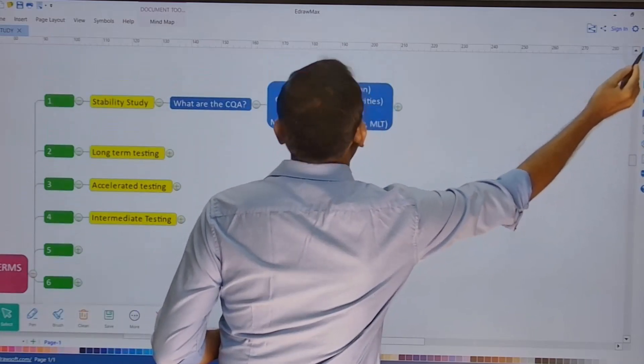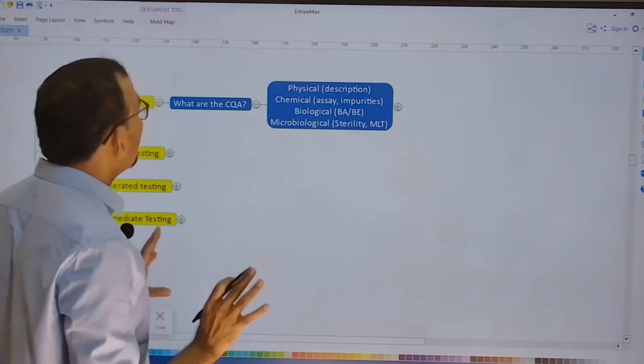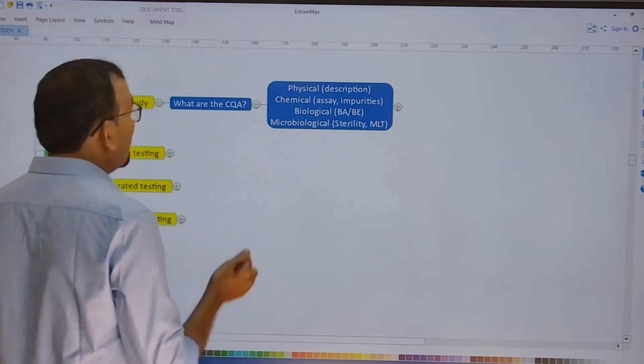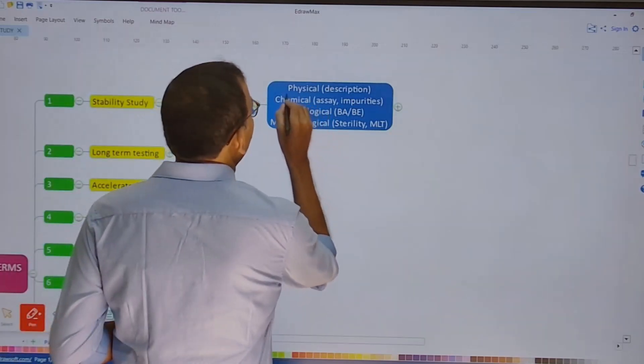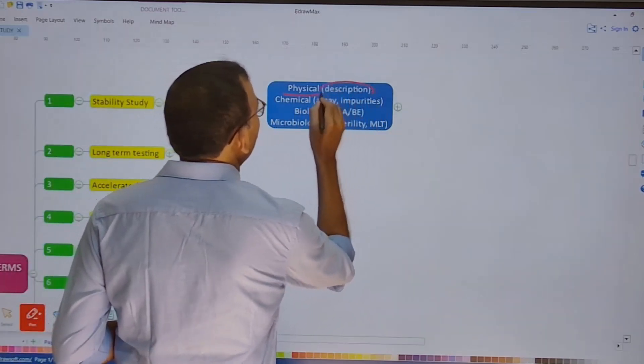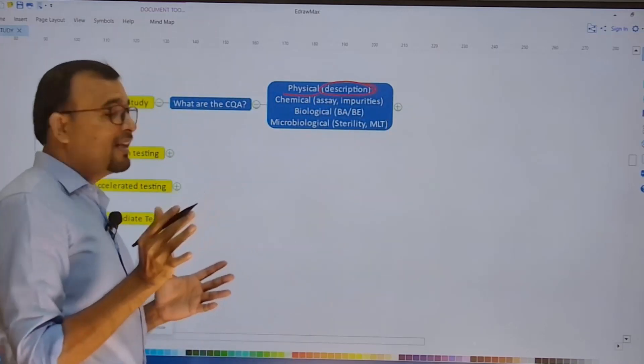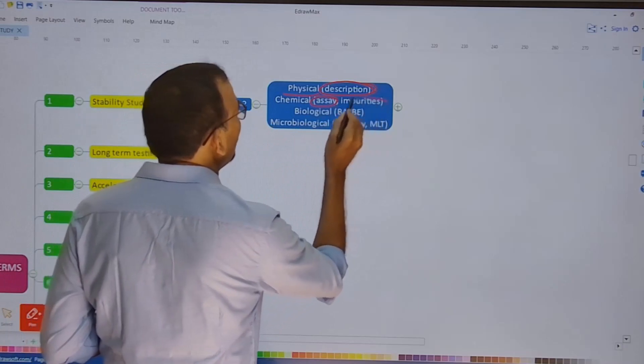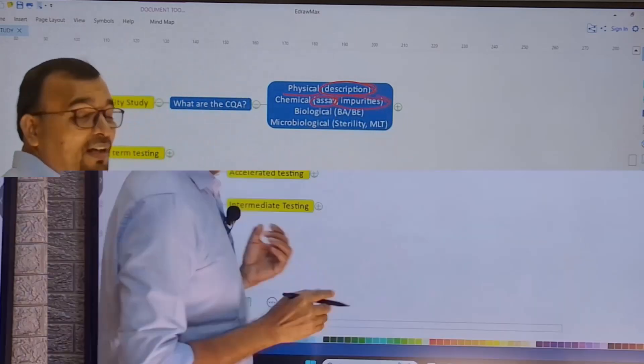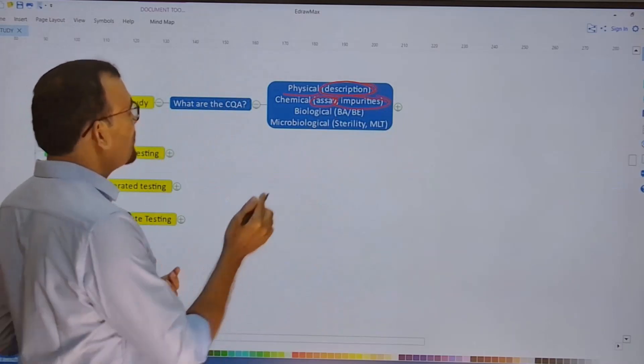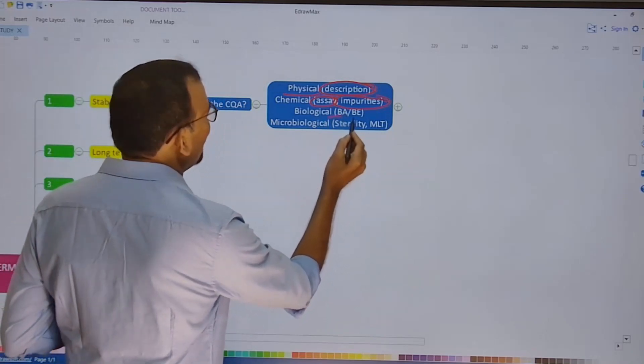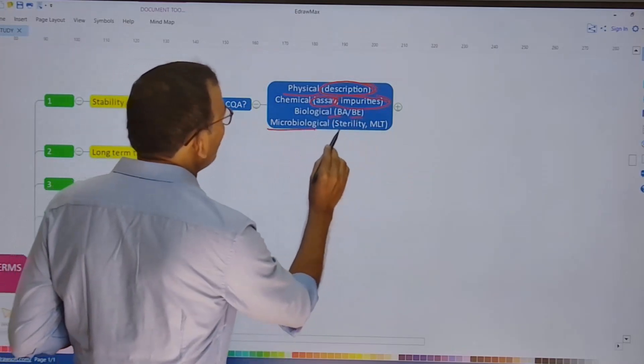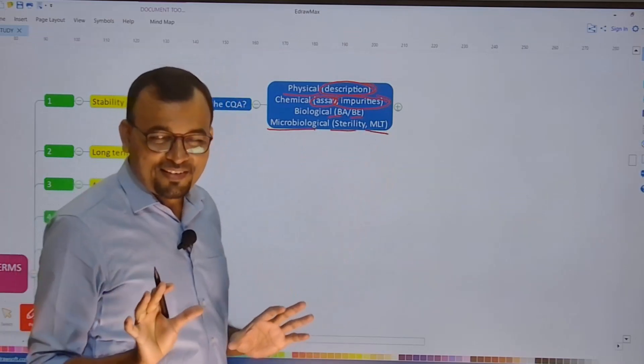So what are the critical quality attributes for a drug product? If you want to understand the physical critical quality attributes, it can be a description. The chemical critical quality attributes can be the assay of the drug product or impurities present in the drug product. Biological critical quality attributes can be bioavailability or bioequivalence, and the microbiological critical attributes could be sterility or microbial limit test.